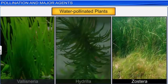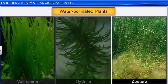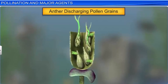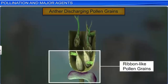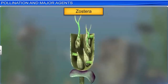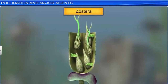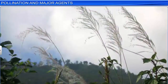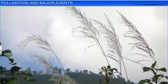In the case of Zostera, a dioecious seagrass, the male and female flowers remain submerged in water. The male flowers produce long and ribbon-like pollen grains which have a mucilaginous covering that protects them from getting wet. The pollen released in water is carried by water currents towards the submerged stigma, and thus pollination is completed. Surprisingly, in aquatic plants, wind pollination — also called anemophily — is more widespread than water pollination.